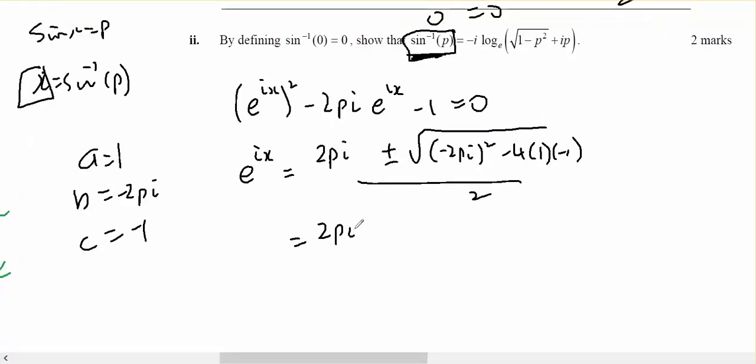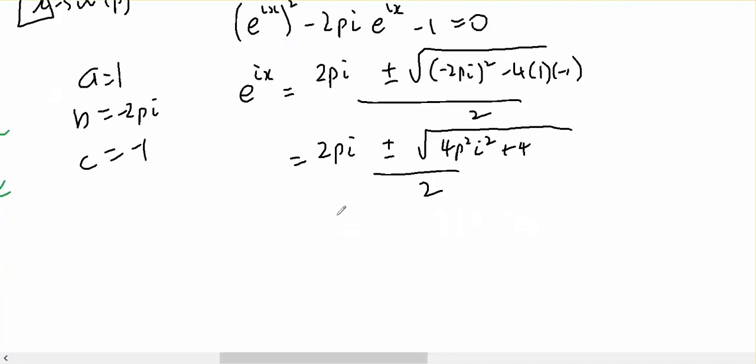This equals 2pi plus or minus the square root of 4pi squared plus 4, all over 2, which equals 2pi plus or minus 2 square root of 1 minus p squared by turning i squared into negative, all over 2, which gives pi plus or minus the square root of 1 minus p squared.